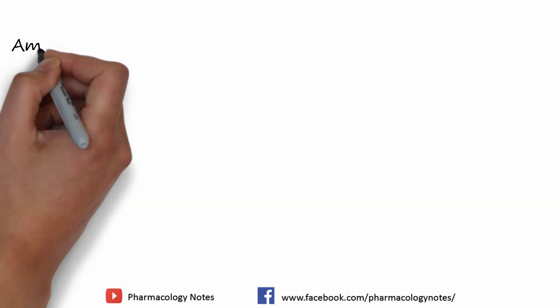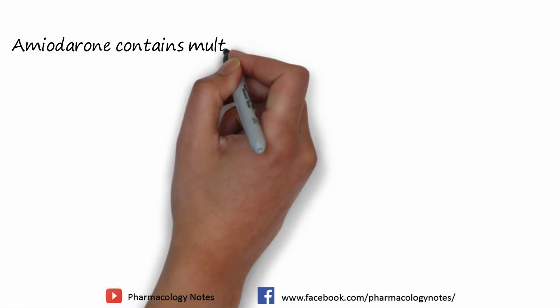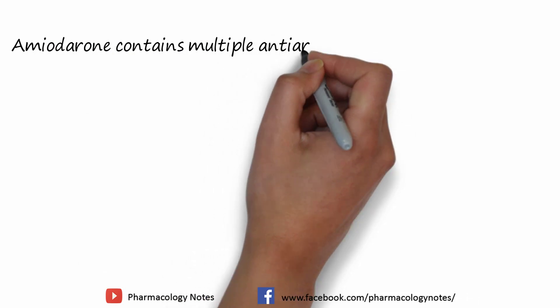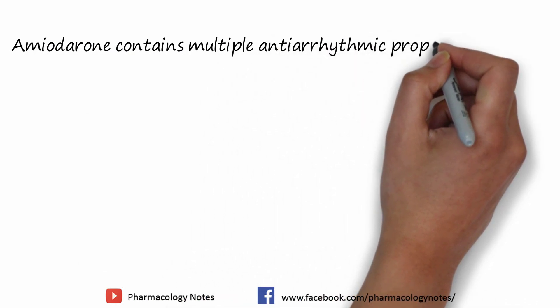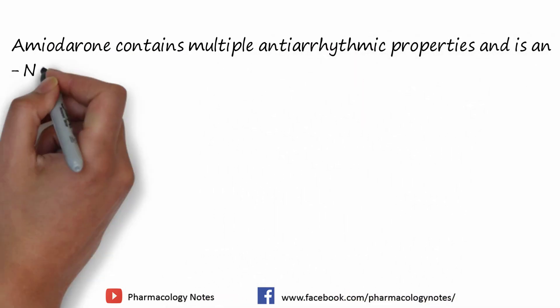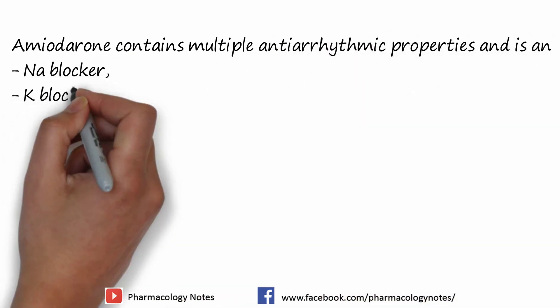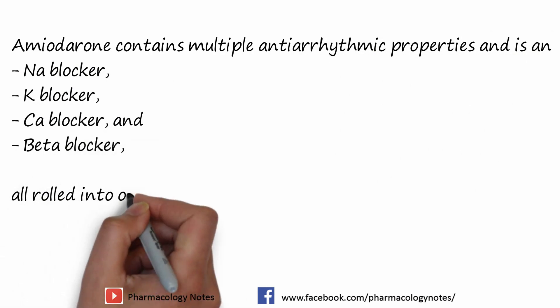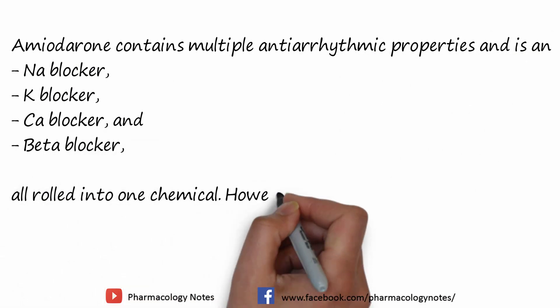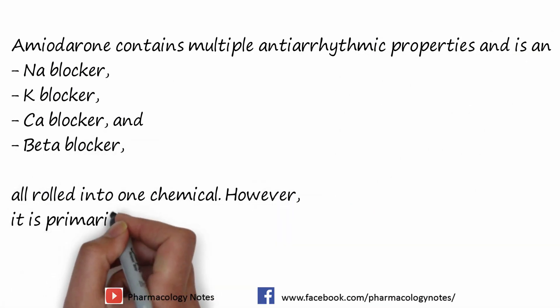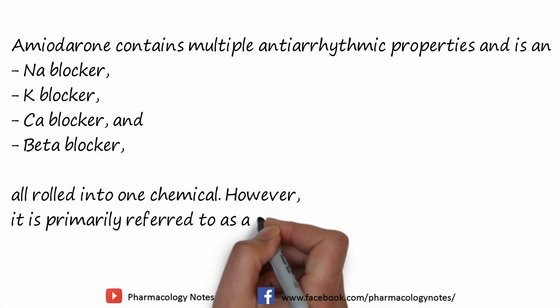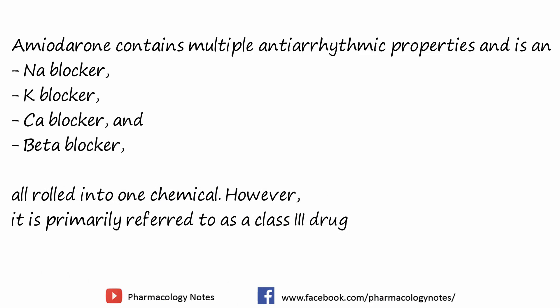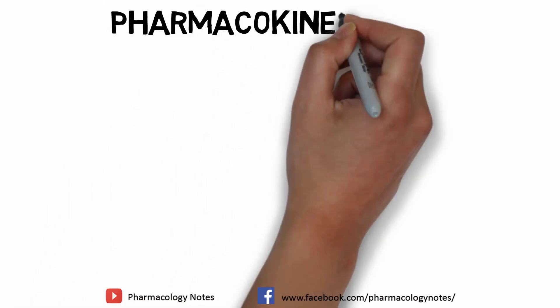This also increases the QT interval on the ECG. Amiodarone contains multiple antiarrhythmic properties and is a sodium channel blocker, potassium channel blocker, calcium channel blocker, and beta blocker rolled into one chemical. However, it is primarily classified as a class 3 antiarrhythmic drug.